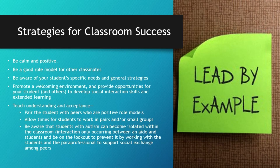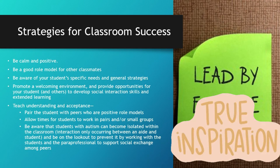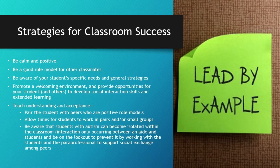Strategies for classroom success: be calm and positive; be a good role model for other classmates; be aware of your students' specific needs and general strategies; promote a welcoming environment and provide opportunities for your student and others to develop social interaction skills and extended learning; teach understanding and acceptance; pair the student with peers who are positive role models; allow times for students to work in pairs and/or small groups; be aware that students with autism can become isolated within the classroom, interaction only occurring between an aide and student, and be on the lookout to prevent it by working with the students and the paraprofessional to support social exchange among peers.